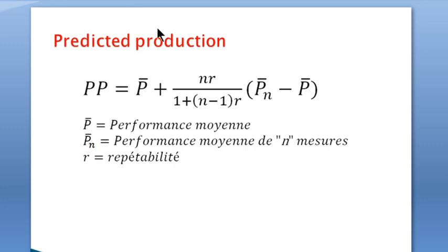Another important element to estimate is the potential production. The predicted production is an anticipated determination of what will be the performance, the next performance of the animals. For this, some information must be available, like the number of records or the number of repetitions of the performance, the repeatability must be known, and also the mean of n number of performances must be known or estimated.